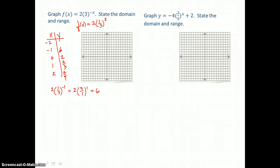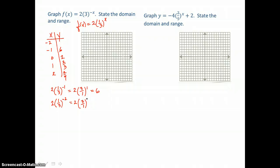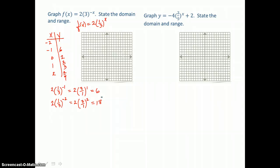And now we want to let x equal negative 2. So we'll do the same thing. We'll get rid of that negative exponent first by writing 3 over 1 to the positive 2 power. 3 squared is 9. And 9 times 2 is 18. So our y value is 18.